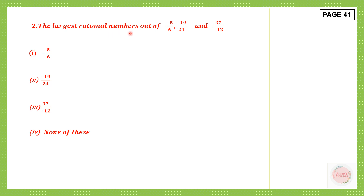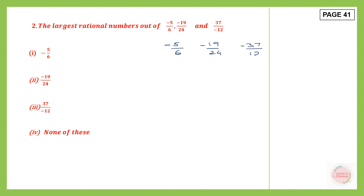The largest rational number out of these — which is the largest rational number? So first we need to write these down. This is minus 5 by 6, this is minus 19 by 24. But here the denominator is negative. Now to compare, we have to transfer the minus sign to the numerator — put it in the standard form. So this is minus 5 by 6, then minus 19 by 24, and minus 37 by 12. Now all the denominators are positive.